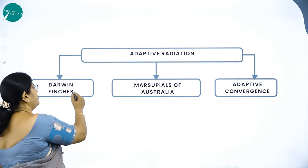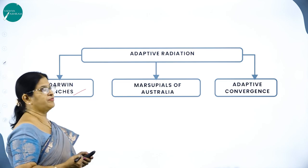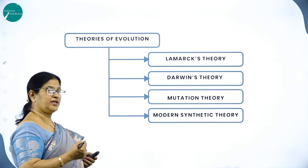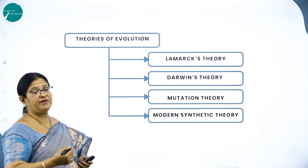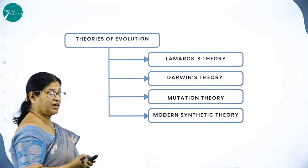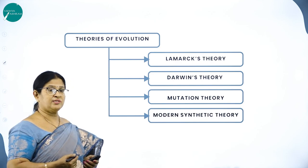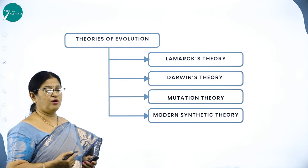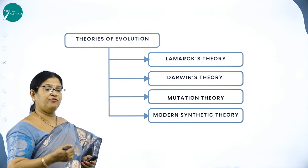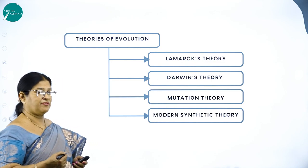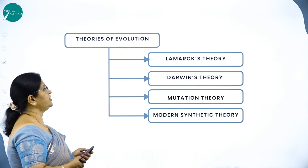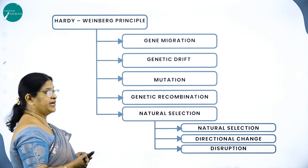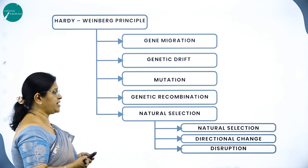Adaptive radiation examples include Darwin's finches, marsupials of Australia, and adaptive convergence. Lamarck's theory includes the inheritance of acquired characters, with the classical example of the giraffe. Darwin's theory — Darwin was a naturalist who traveled on HMS Beagle for many years and formulated his ideas as Darwinism. Then mutation theory, modern synthetic theory, and the Hardy-Weinberg principle — the factors affecting genetic equilibrium are gene migration, genetic drift, mutation, genetic recombination, and natural selection.